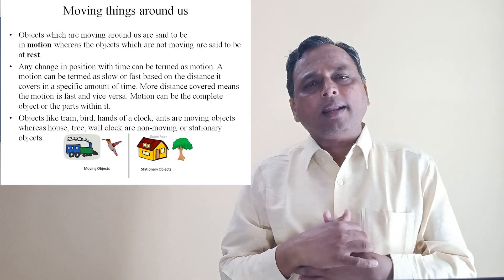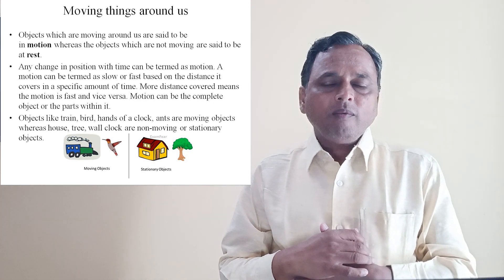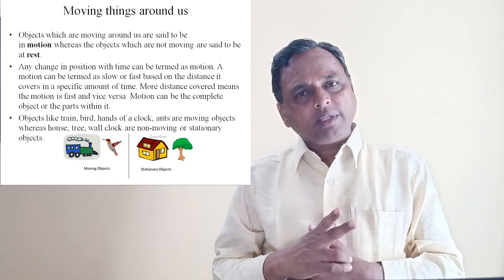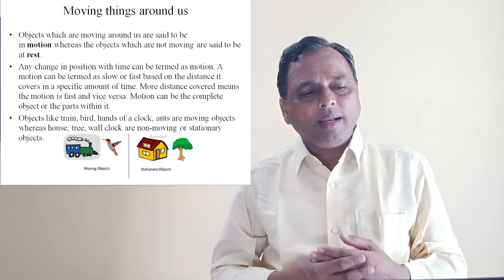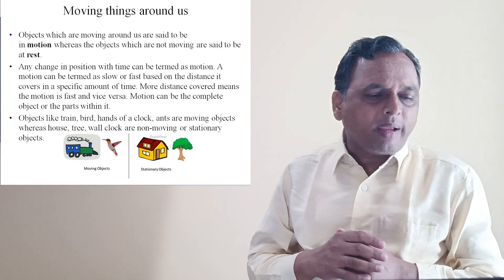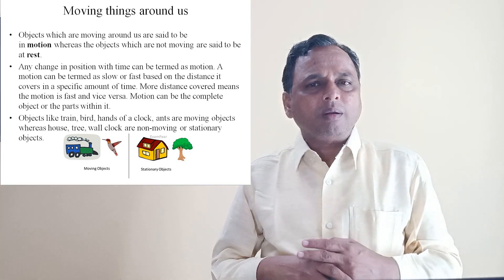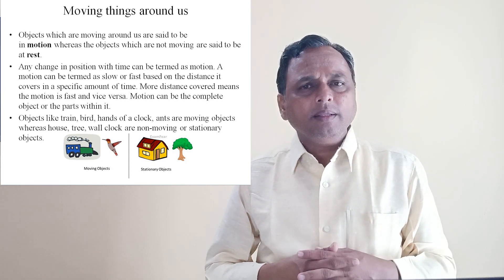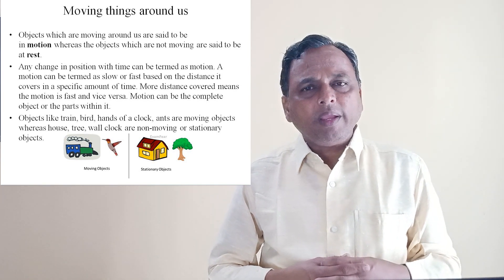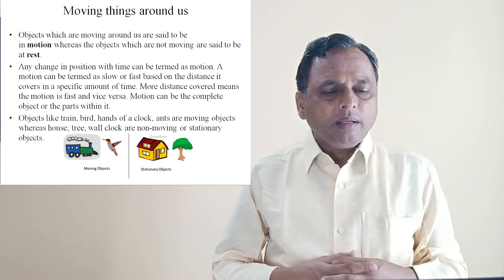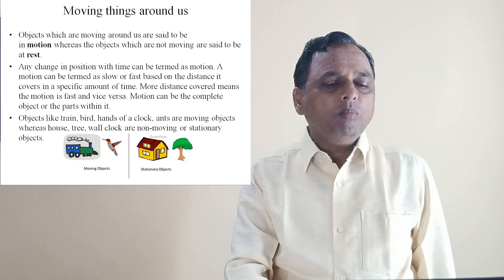Now coming to the another heading - moving things around us. When we say moving things, there are two things - moving, non-moving, motile, immotile. So move, whichever moving, let's call motion - for example, car, bus, flight and all moving, they are in motion. Tree, house, they are not moving, they are stationary. Do not move - stationary means do not move.